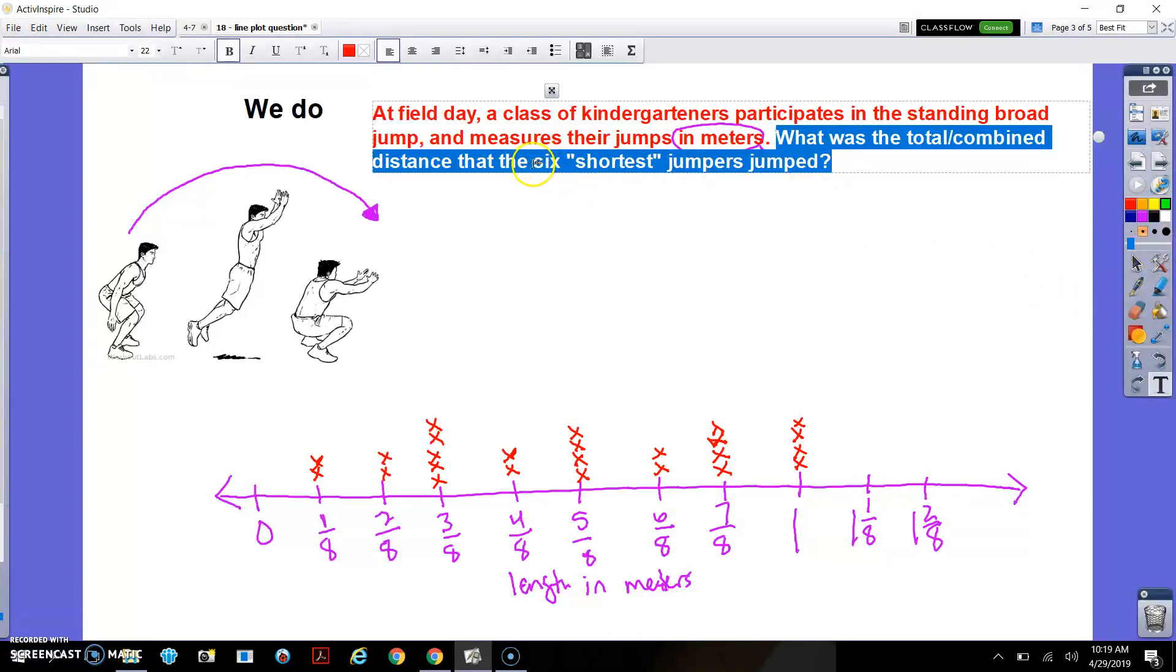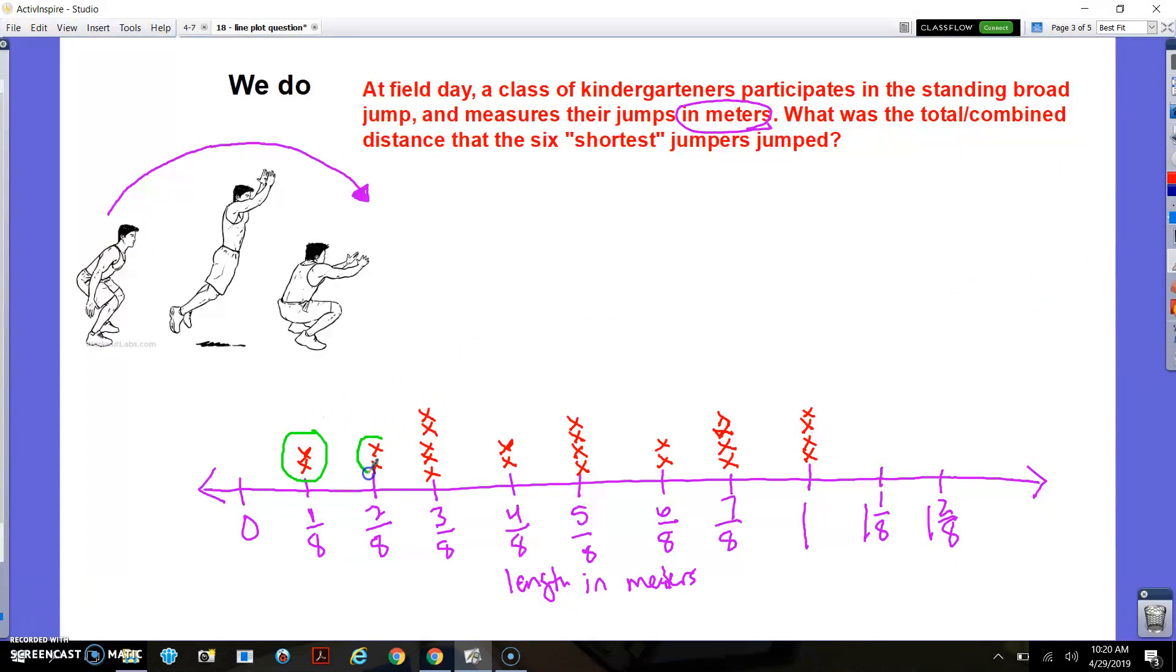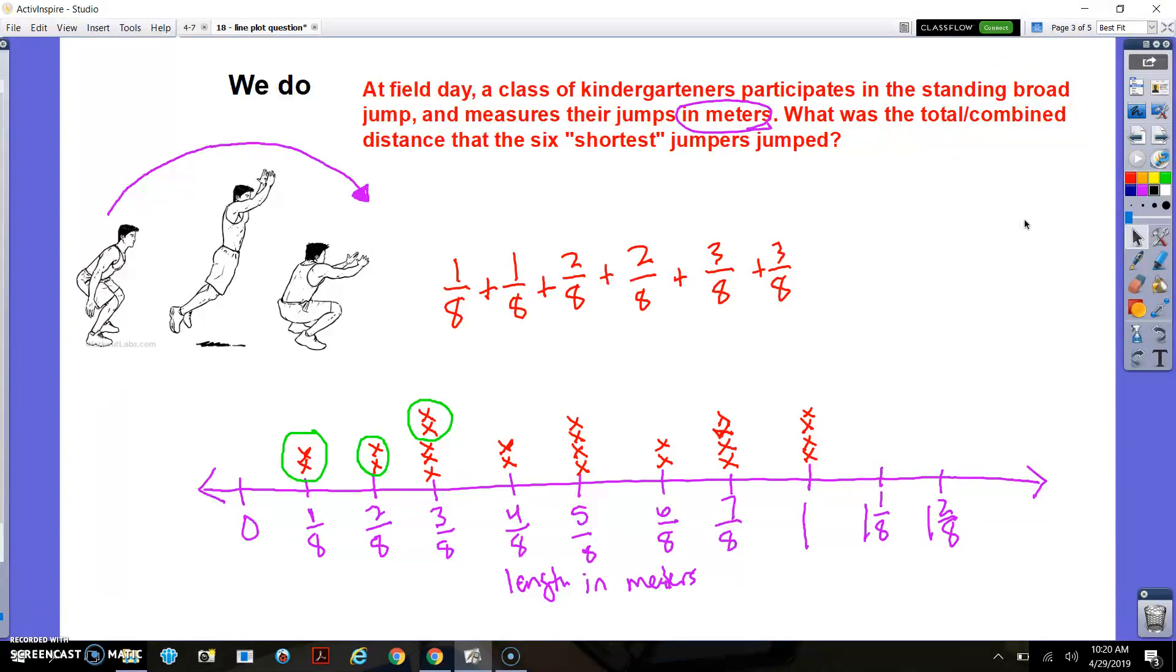All right. So first thing I need to do, I'm only looking at your six shortest jumpers, right? So that is these two, these two, and two more to make six. So two of these. It doesn't really matter which two because they all jumped the same amount. So those are my six shortest jumpers. So in order to find their total jump, if they jump one after another, how far would they go? Well, they would go one eighth plus one eighth plus two eighths plus two eighths plus three eighths plus three eighths. That would be my total jump by my six shortest jumpers.